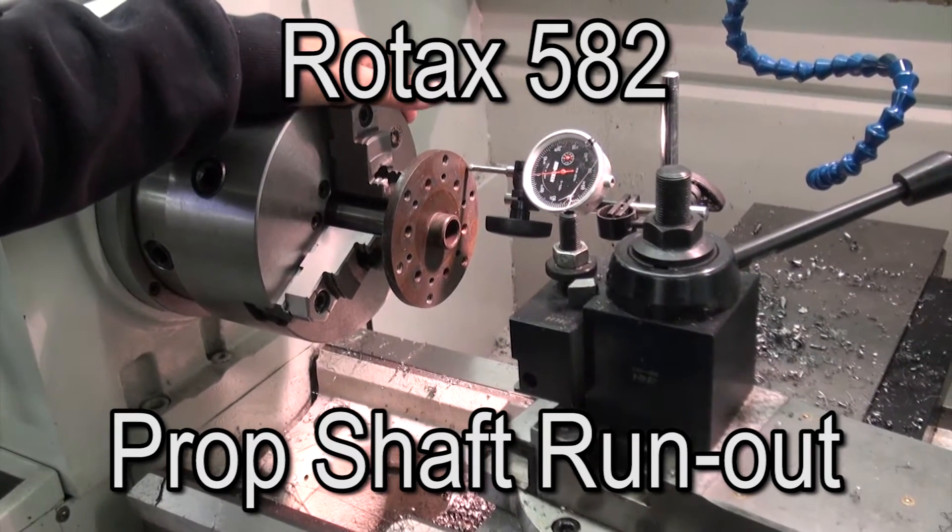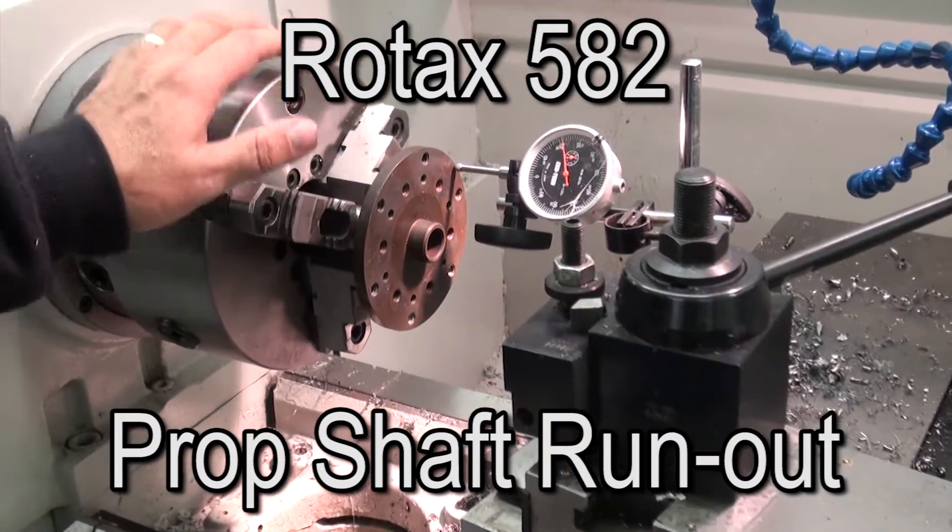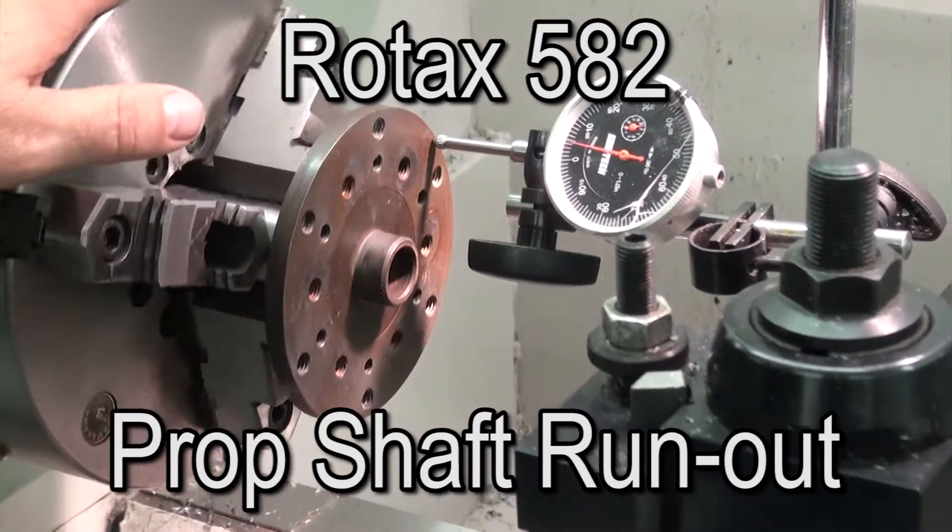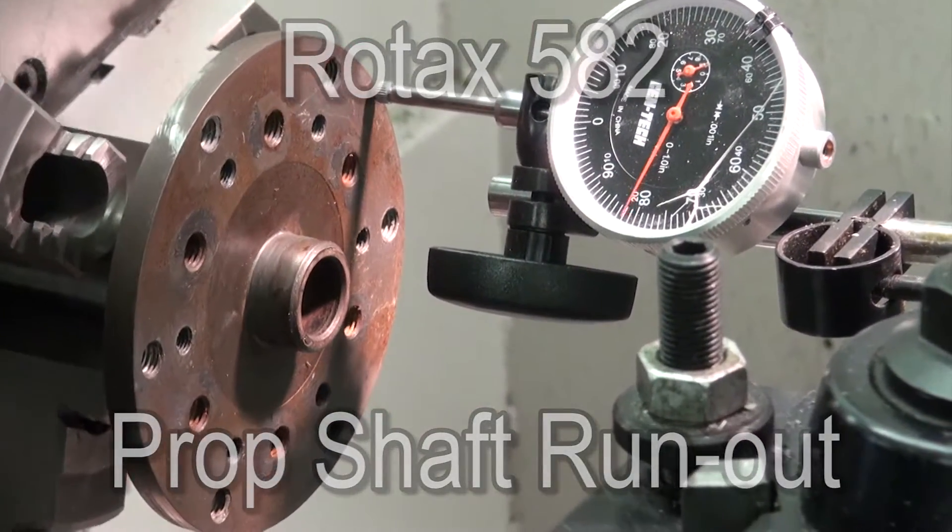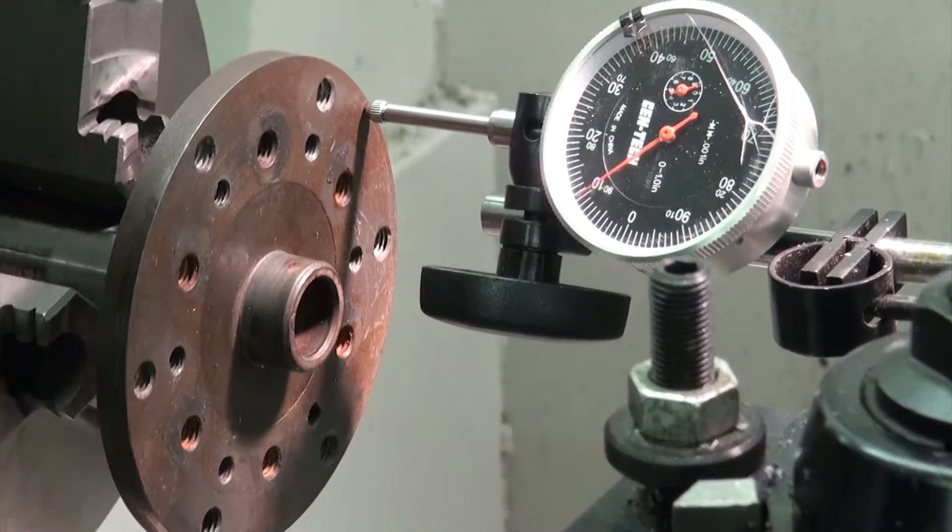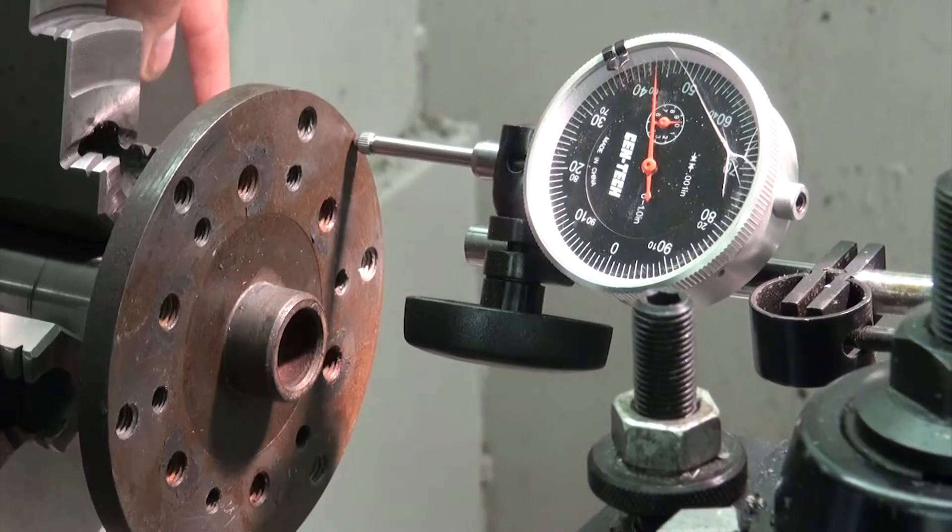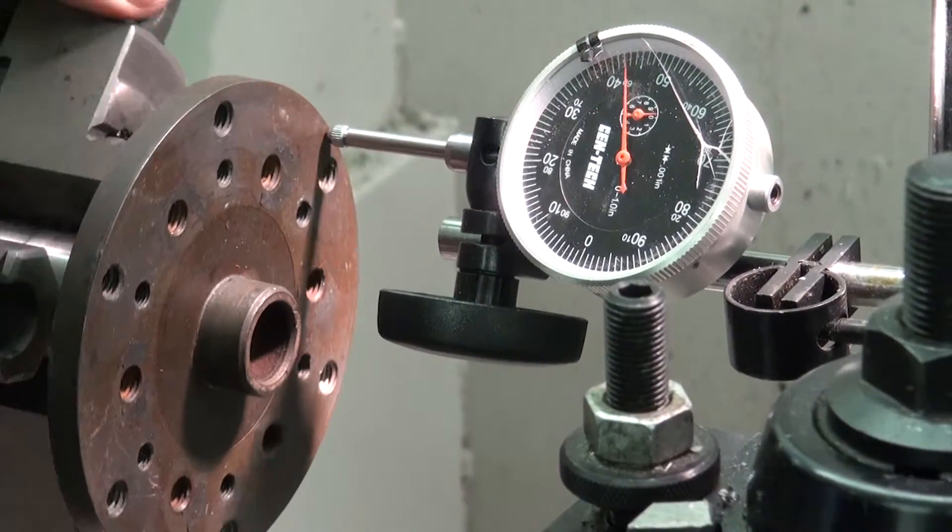And so this one had a prop strike, and we're just measuring here. There's 10, 20, 25, and let's find the low spot there. So it looks like that's zero there. There's 20, 30, 40, 44 thousandths out around,